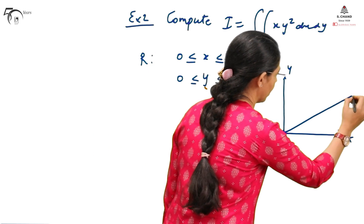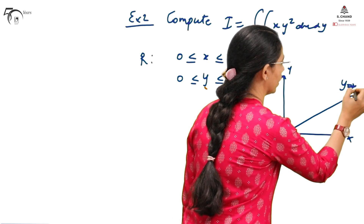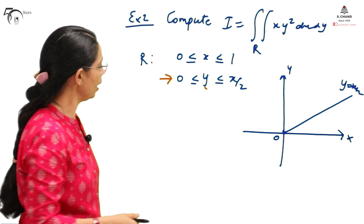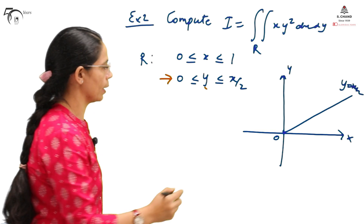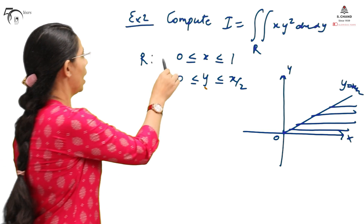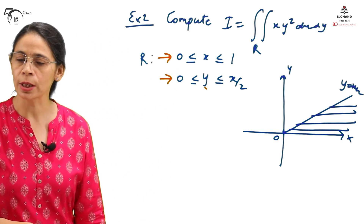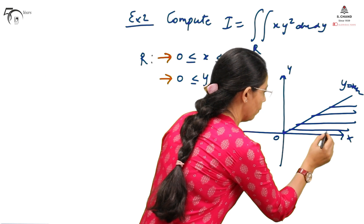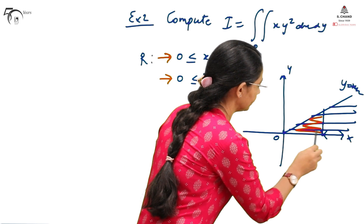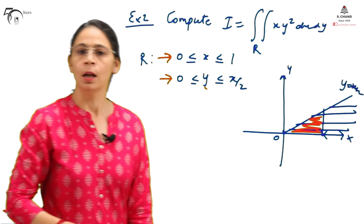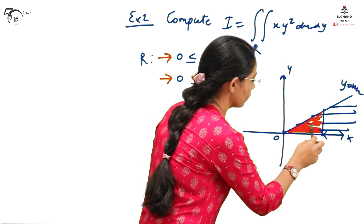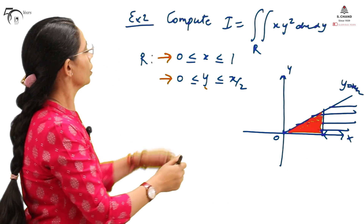The line y = x/2 moves as shown. This portion indicates that y is moving from 0 to x/2. When we bring in the limit for x from 0 to 1, we cut out a portion of the region — the resulting red shaded region becomes our region of integration over which the function needs to be integrated.